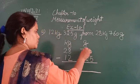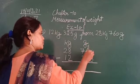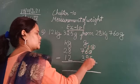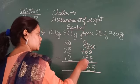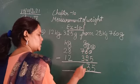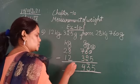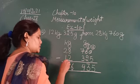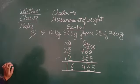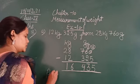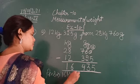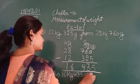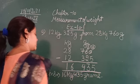So let's subtract. 0 minus 5 — 0 will borrow from here. It becomes 5, this becomes 10. 10 minus 5 is 5. 5 minus 2 is 3. 7 minus 3 is 4. 8 minus 2 is 6. 2 minus 1 is 1. So after subtraction we got the answer: 16 kg 435 grams. Write down the answer — that is 16 kg 435 grams.